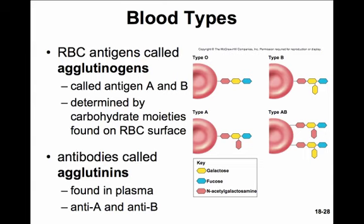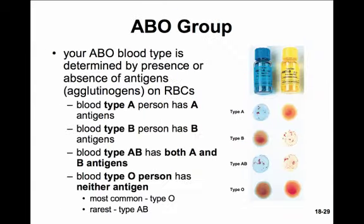Your ABO blood type is determined by the presence or absence of these particular antigens, otherwise called aglutinogens. Blood type A has A antigens on the cell surface; blood type B has B antigens; AB has both antigens; and blood type O has neither antigen. Blood type O is the most common blood type, and the most rare blood type is AB.